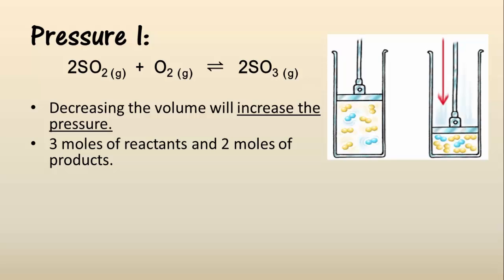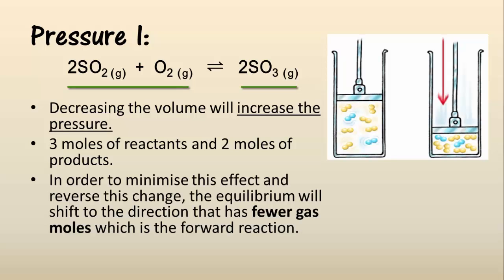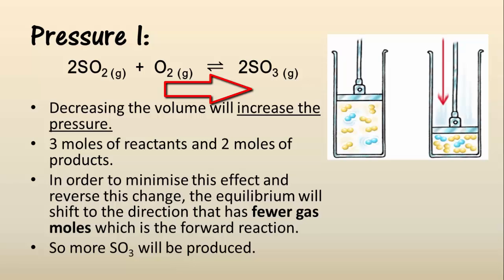In this reaction there are 3 moles of gas molecules on the left — in other words the reactants — and 2 moles of gas molecules on the right with the products. So with an increase in pressure inside the reaction vessel, the equilibrium reaction will shift to the side that has the least gas molecules, which in this case is the forward reaction. This will result in more sulphur trioxide being produced.